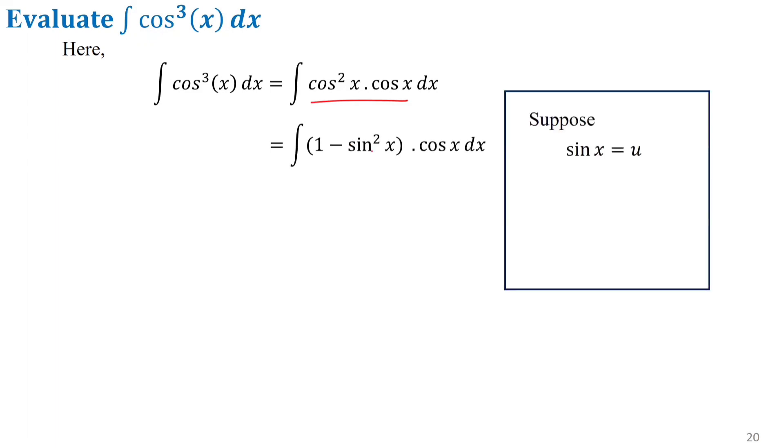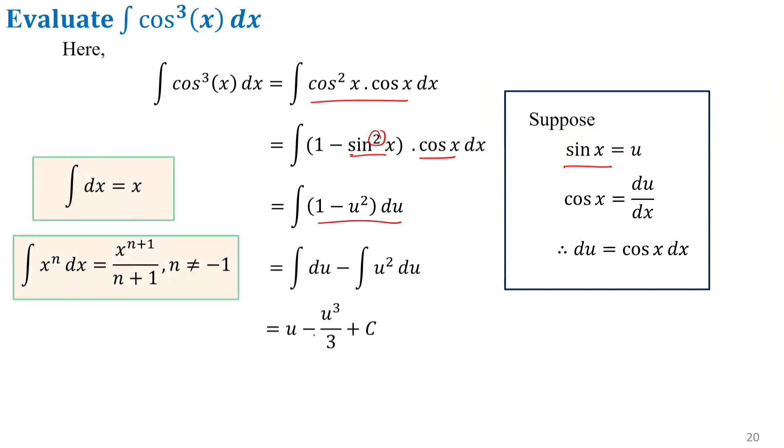For sine x, the differentiation is cosine x. If we have 1 minus sine x, substituting u equals sine x gives du equals cosine x dx. For the integral, we can write it in terms of u. The integration yields u cubed divided by 3, which becomes sine cubed x divided by 3 plus C.